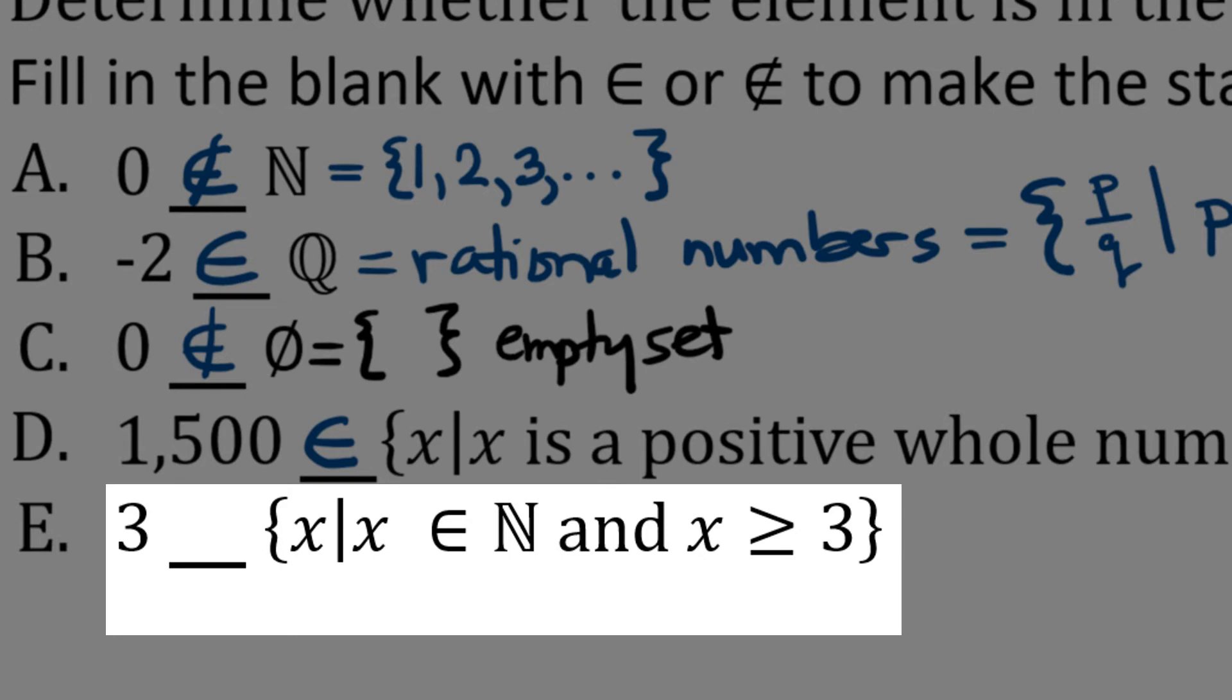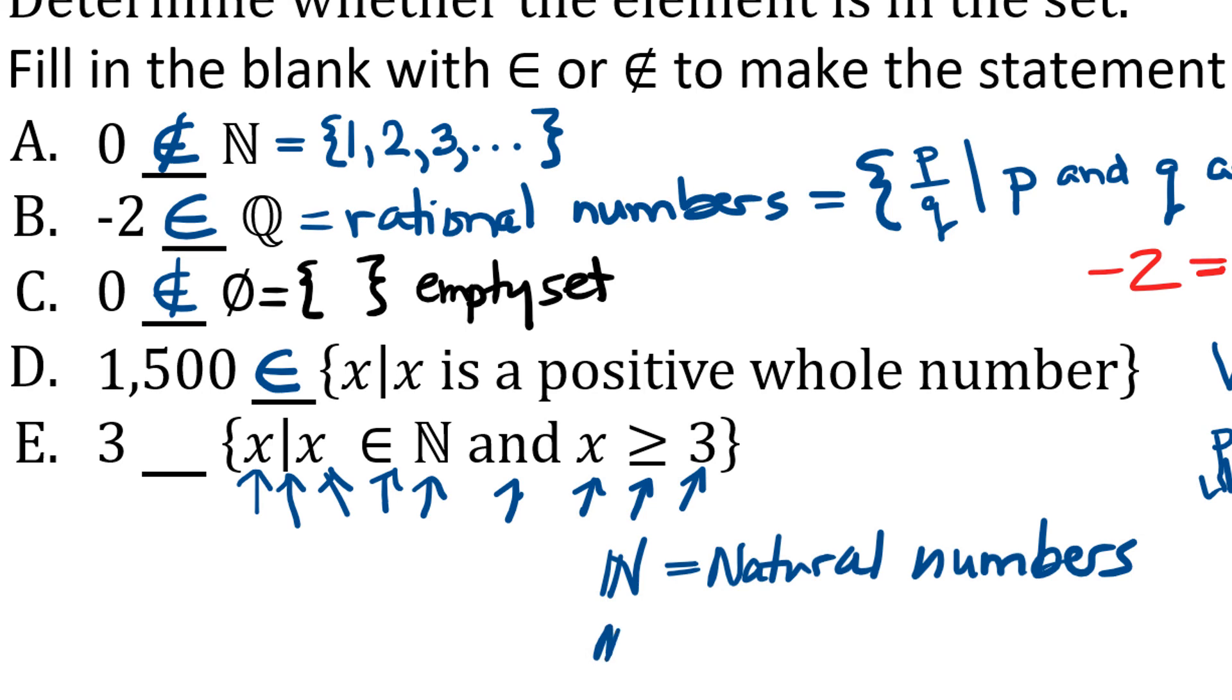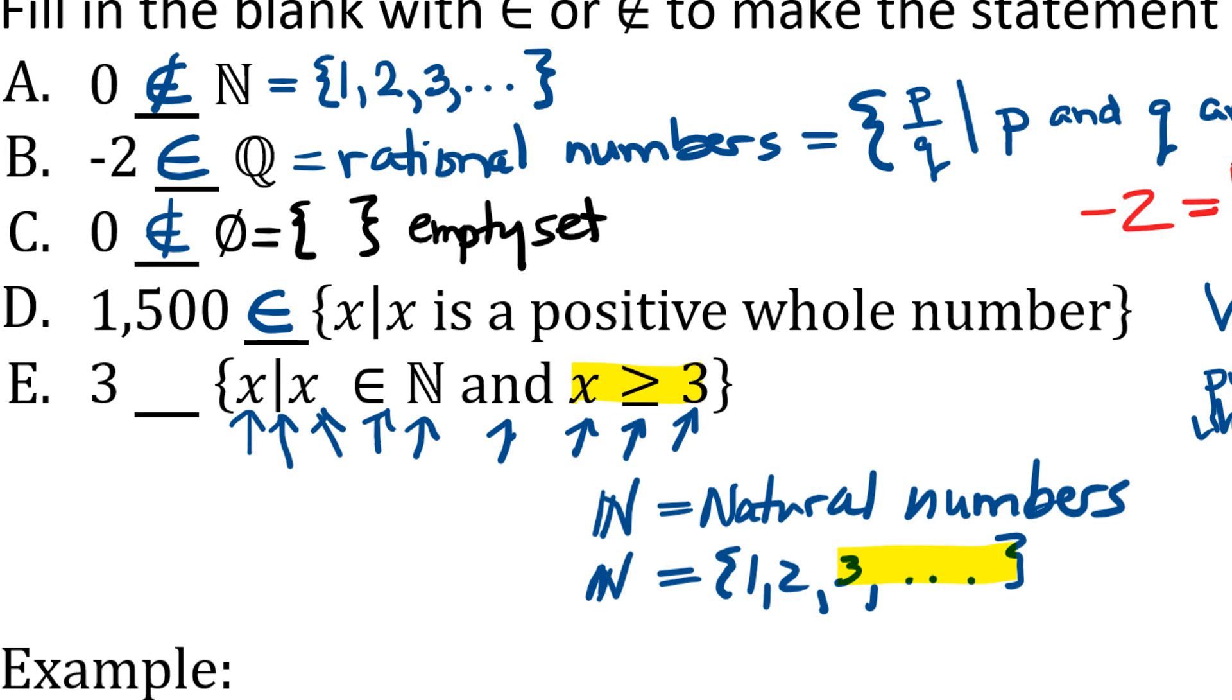Now let's look at part E. 3 is an element or is not an element of the set of all numbers X such that X is in the natural numbers and X is greater than or equal to 3. Okay, so there's a lot to kind of unpackage here. So let's take a look. So first of all, N means natural numbers and we know the natural numbers as we mentioned above begins 1, 2, 3 and continues with that pattern forever. All the numbers X in this set are in the set of natural numbers but they also have the characteristic that they're greater than or equal to 3. Greater than or equal to 3 would leave out which two numbers, is the 1 and the 2. So we are talking about a set that starts with the number 3 and then 4 and then 5 and then so on. So is 3 an element of this set? Yes it is. It's right there at the beginning.